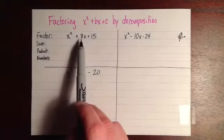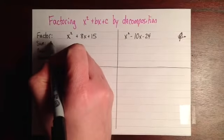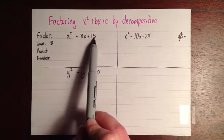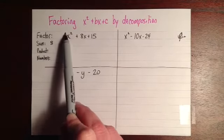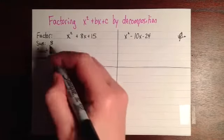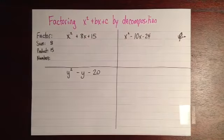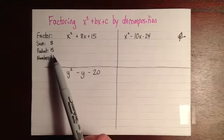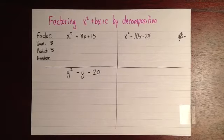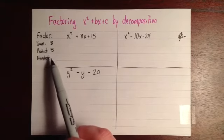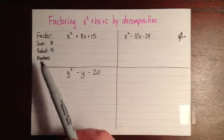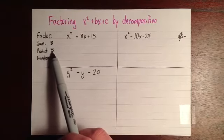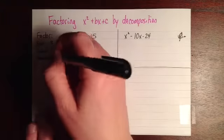The sum is going to be the b value, so the sum that we're looking for is 8 here. And the product that we're going to look for is a times c, so it's going to be 1 times 15, which is 15. So we need to look for two numbers that add up to 8 and multiply to 15. If you think it's easier to go through the things that multiply to 15, there's 1 times 15, that doesn't add up to 8. And then 3 times 5, and 3 times 5 is 15, and 3 plus 5 is 8. So those are the numbers.